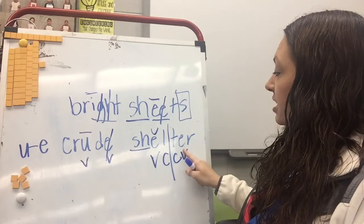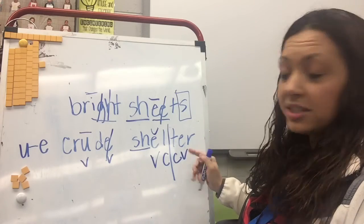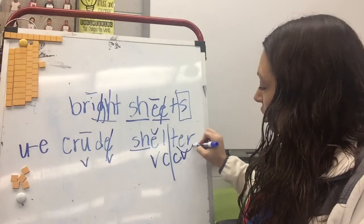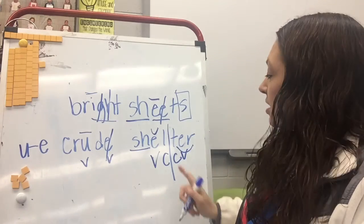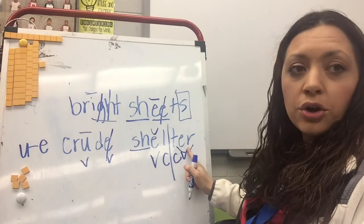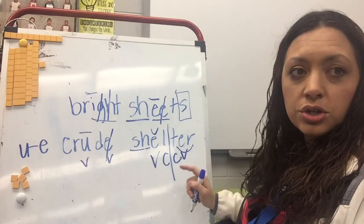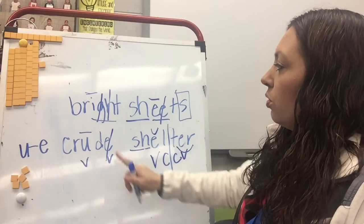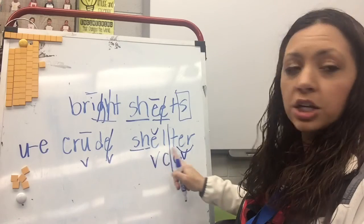My vowel is the E, but look, it's got combination E-R in there. It's got E-R. So remember, I'm going to hook it together underneath. And then I have T-ER, T-ER. So SHELL-TER, SHELTER. So, so far I've got CRUDE, SHELTER.